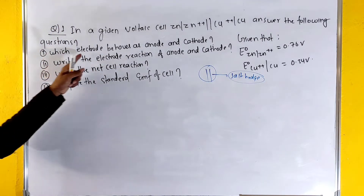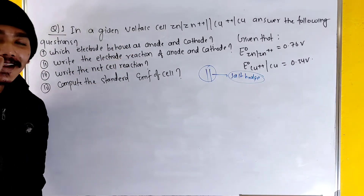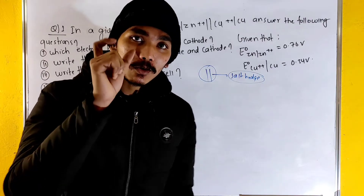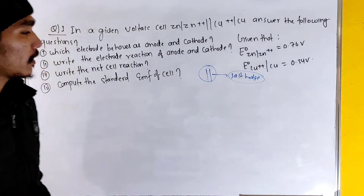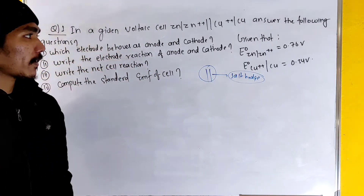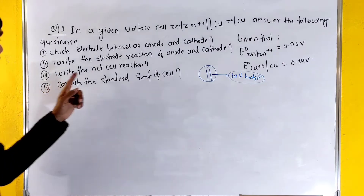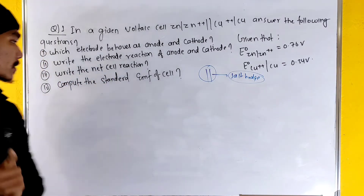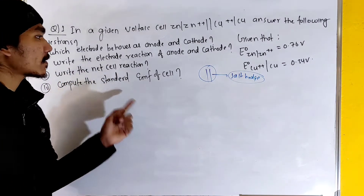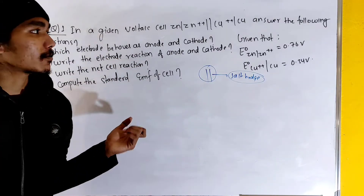Which electrode behaves as anode and cathode? Write the electrode reactions at the anode and cathode. Write the net cell reactions. Compute the standard EMF of the cell.